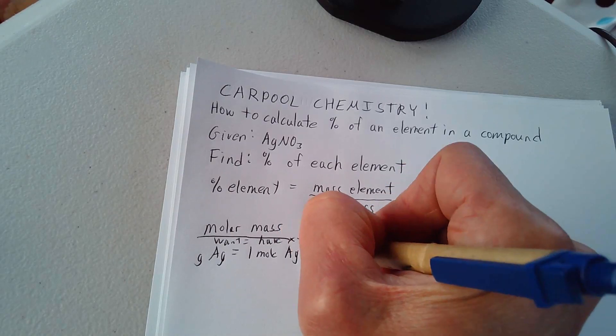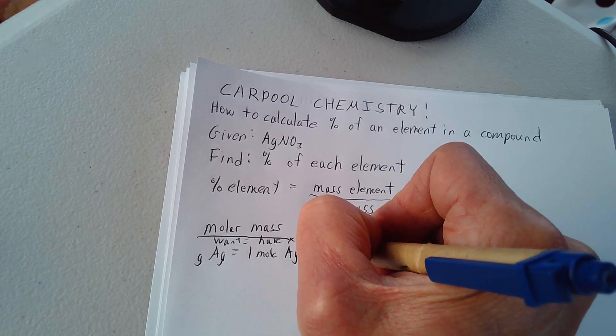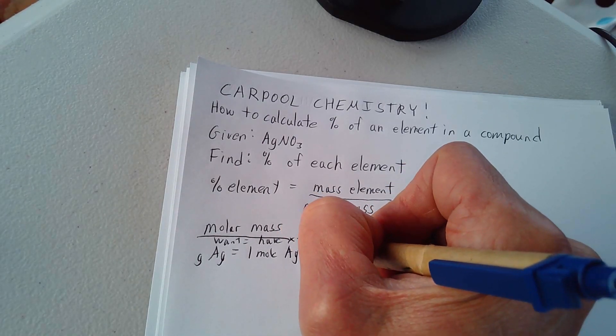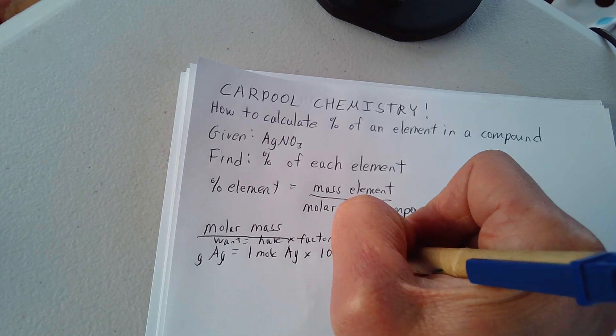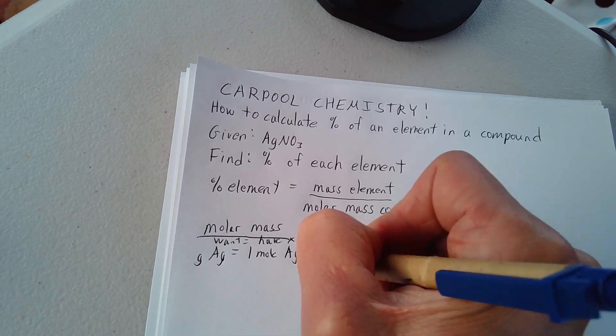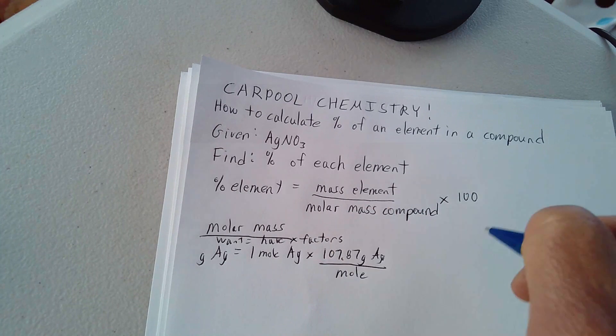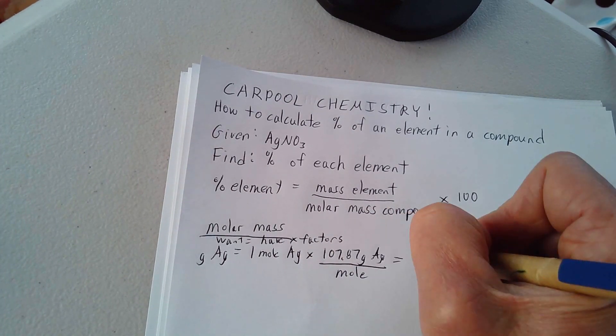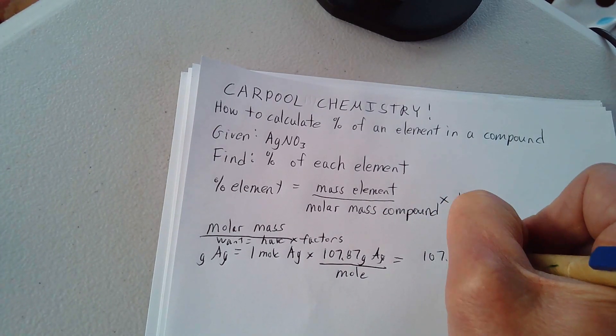Times 107.87 grams of silver per mole. And so you're looking at 107.87 grams.